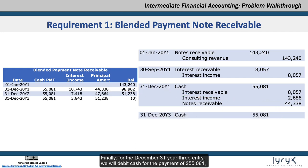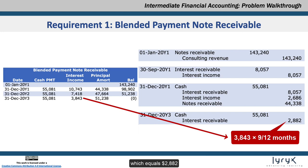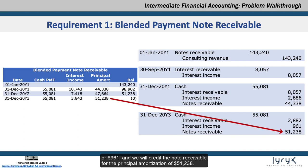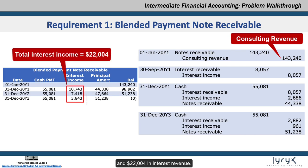Finally, for the December 31st Year 3 entry, we will debit cash for the payment of $55,081, credit interest receivable for the September 30th Year 3 accrual, which would have been calculated as $3,843 in Year 3 income multiplied by 9 out of 12 months, which equals $2,882. We will credit interest income for the difference between the Year 3 income and the receivable accrual, or simply $3,843 times 3 out of 12 months, or $961. And we will credit the note receivable for the principal amortization of $51,238. This is the final entry for the blended payment note receivable. We can also observe that over the 3-year life of the note receivable, Acme will earn $143,240 in consulting revenue and $22,004 in interest revenue.